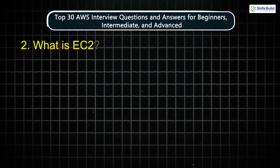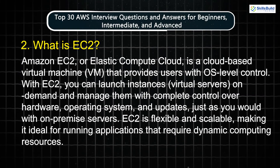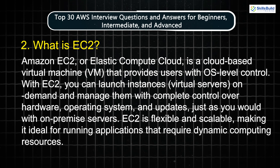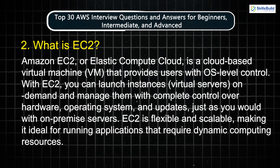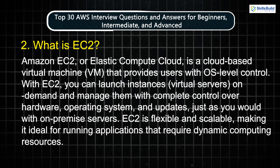Question 2: What is EC2? Amazon EC2, or Elastic Compute Cloud, is a cloud-based virtual machine that provides users with OS-level control. With EC2, you can launch instances on demand and manage them with complete control over hardware, operating system, and updates, just as you would with on-premise servers. EC2 is flexible and scalable, making it ideal for running applications that require dynamic computing resources.